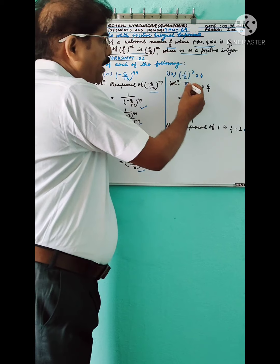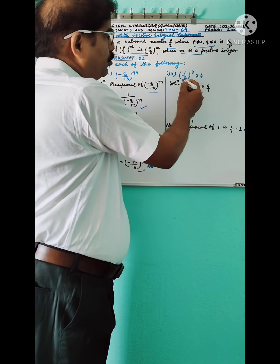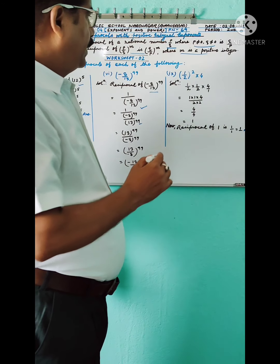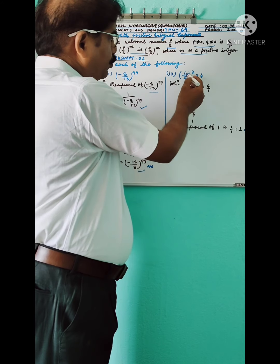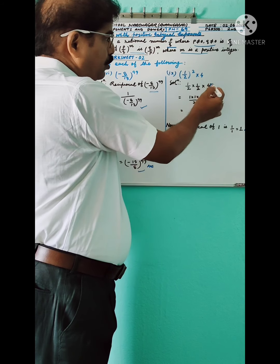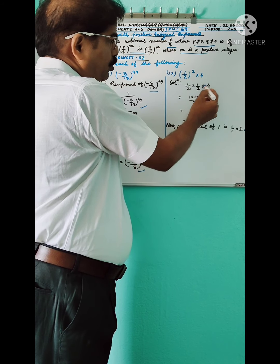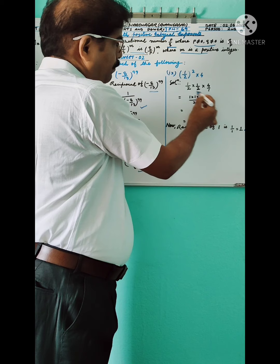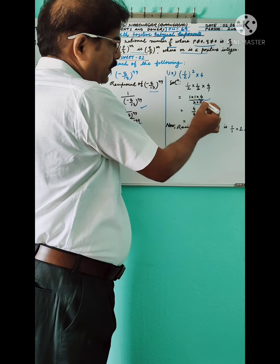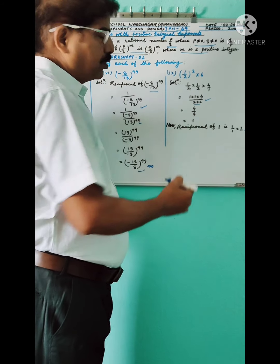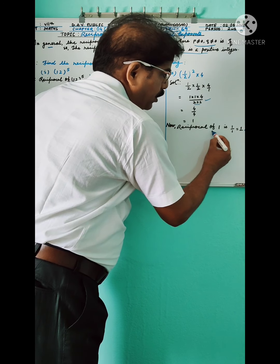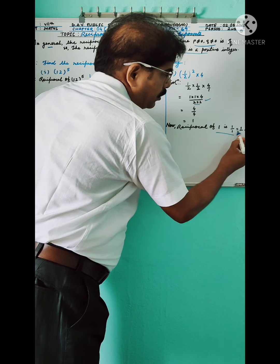Question number 9: find the reciprocal of (1/2)² × 4. First simplify the expression: (1/2)² × 4 = (1/2) × (1/2) × 4 = (1 × 1 × 4) / (2 × 2 × 1) = 4/4 = 1. So the reciprocal of 1 is 1/1, which equals 1.